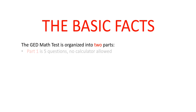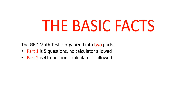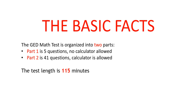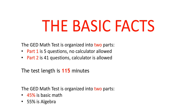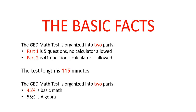The GED math test is organized into two parts. Part one is five questions and you cannot use a calculator. Part two is 41 questions and you can use a calculator. You have 115 minutes to complete these 46 questions of part one and part two.